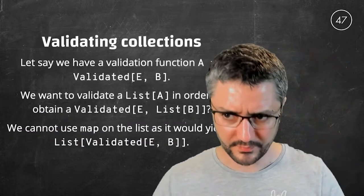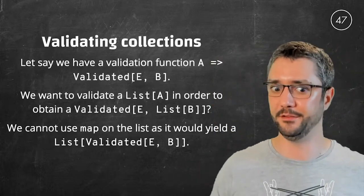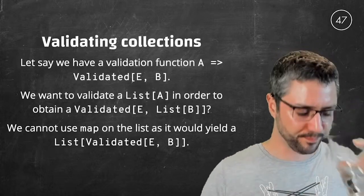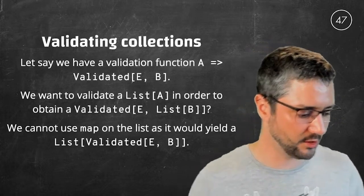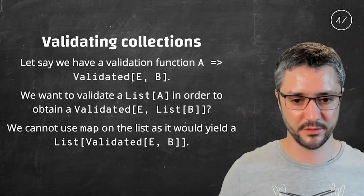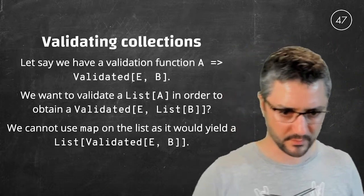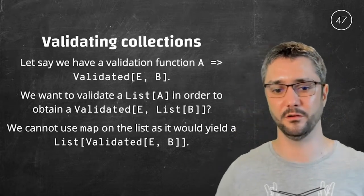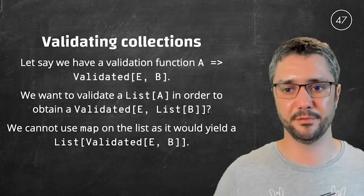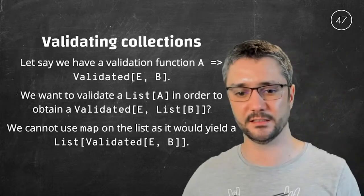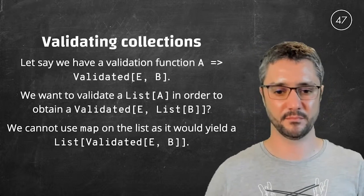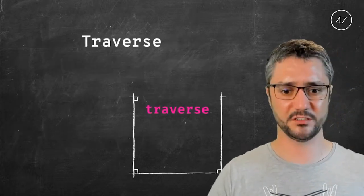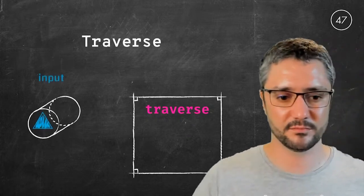And finally, there is one remaining thing that will be very useful. It's about validating collections. Let's say we have a function that goes from one element type, say integer, into a validated string and integer. How can we use this function in order to validate a list of integers? We cannot use map because it will give us a list of validated. And what we want is a validated of list. So here enters the last type class we will mention tonight, which is traverse.